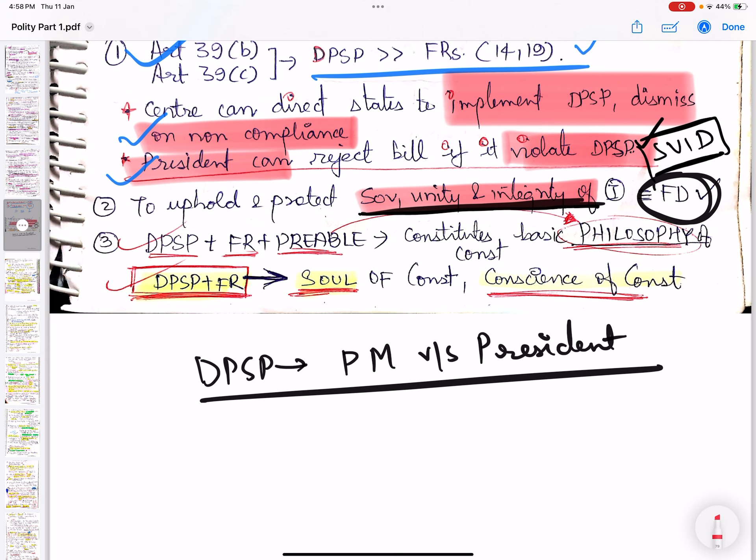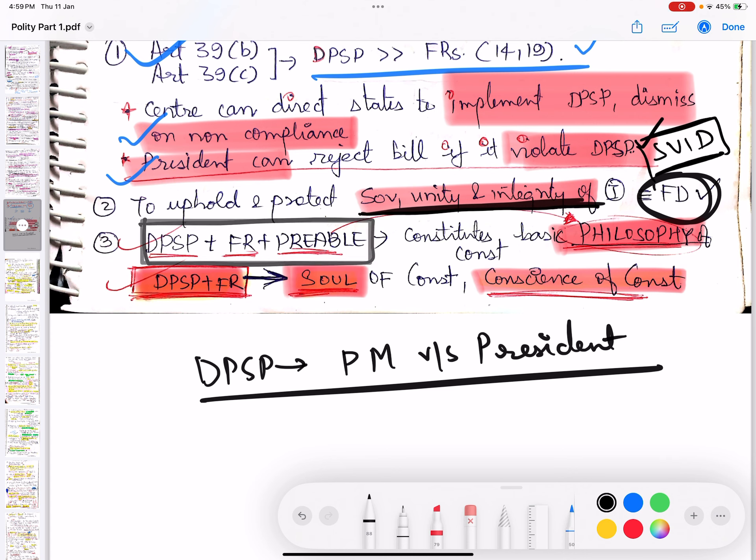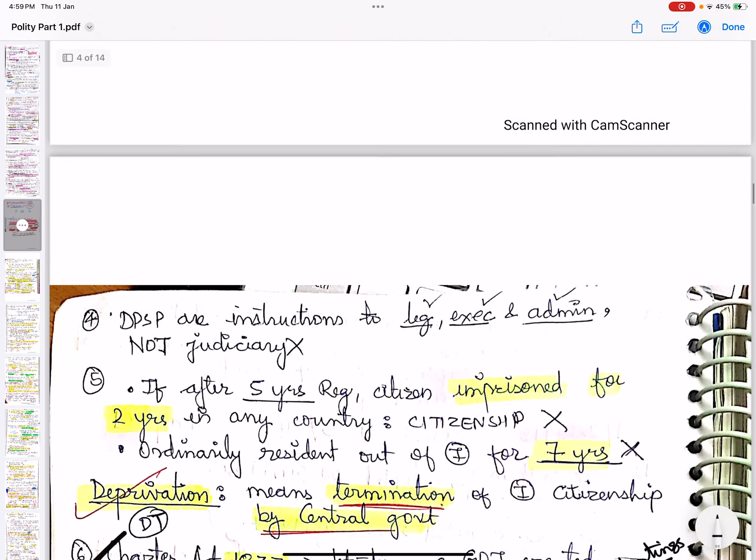DPSP plus Fundamental Rights plus Preamble - these together form the basic philosophy of the Constitution. DPSP plus Fundamental Rights are the soul of the Constitution. So if asked what forms the philosophy, it's DPSP plus Fundamental Rights plus Preamble. If asked what is the soul, it's DPSP plus Fundamental Rights.